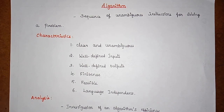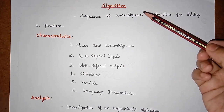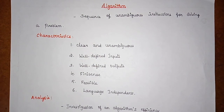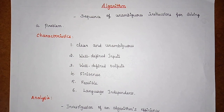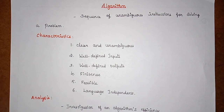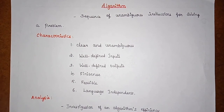Once a problem is defined, the steps required to solve it should be stated clearly in the required order — that is what the algorithm consists of. Coming to the characteristics of an algorithm: for any given problem there are a number of ways to solve it, and thus a number of possible algorithms. We can select an algorithm based on its efficiency — how fast it executes and how much memory space it requires.